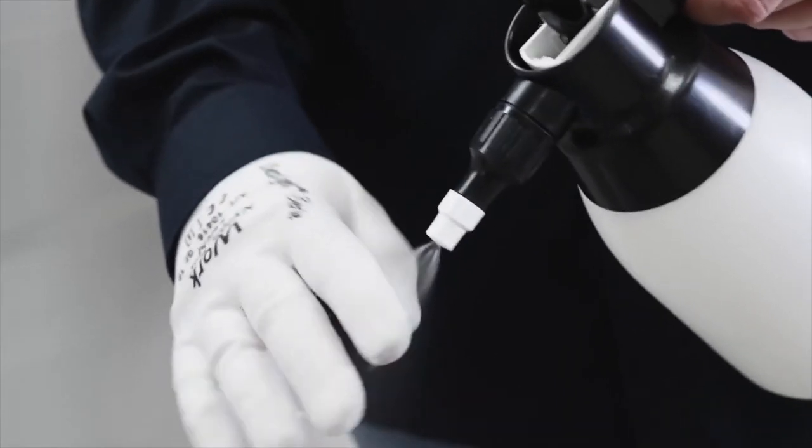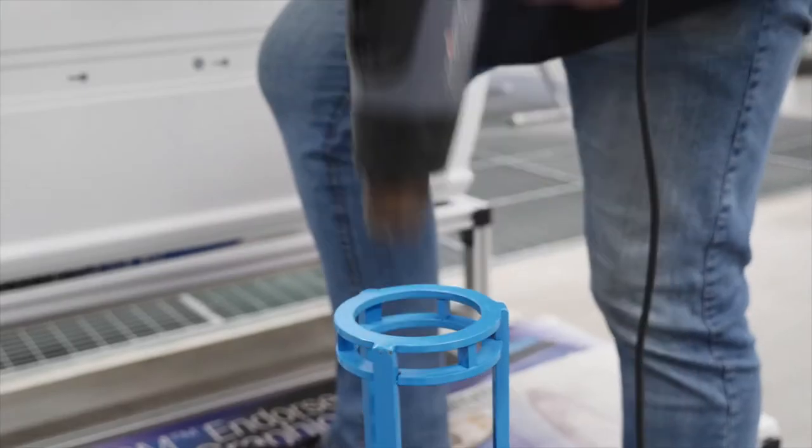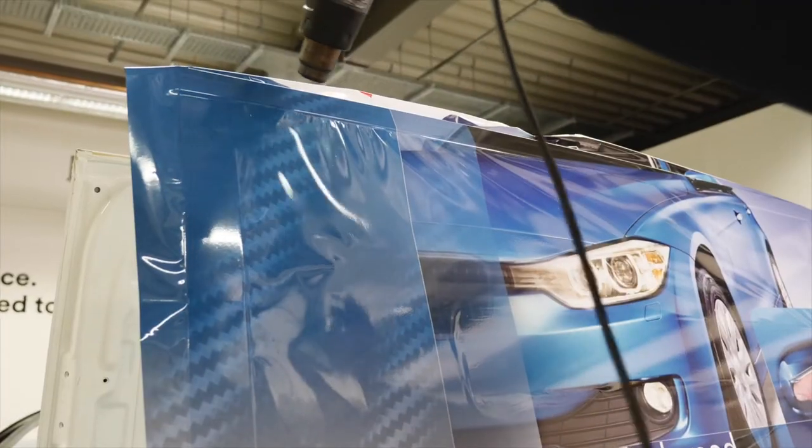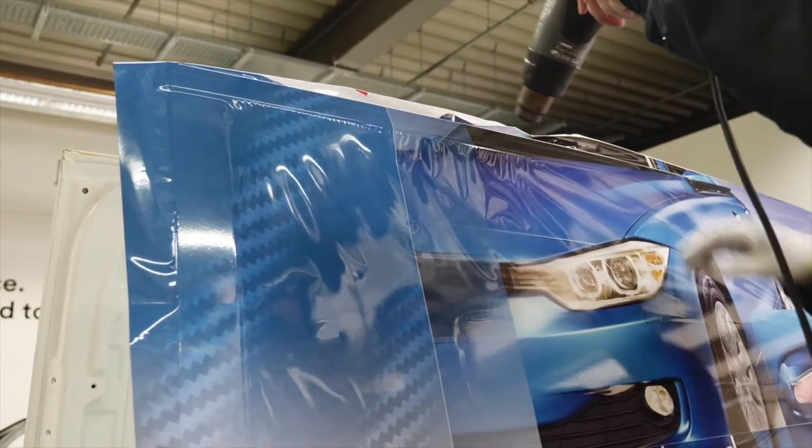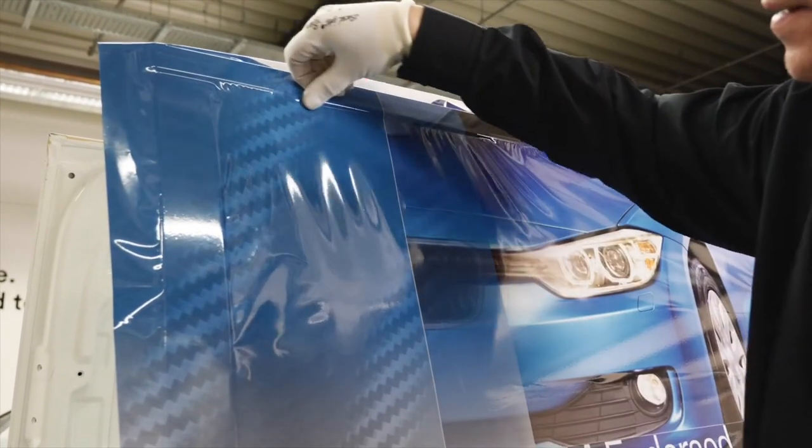Wet your glove with soapy water to reduce any friction with the film. Then heat the film to a surface temperature of 50 degrees centigrade and fix the film with your finger along the contours at the top.